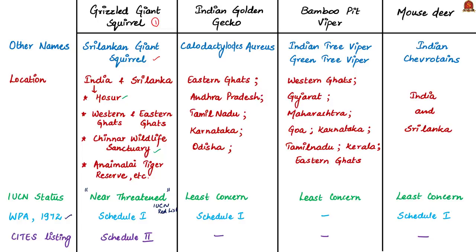The Grizzled Giant Squirrel is also listed under Schedule 2 of CITES — the Convention on International Trade in Endangered Species of Wild Fauna and Flora. Next, let us see about the Indian Golden Gecko. Its scientific name is Calodactylodes aureus. The etymology of its genus name Calodactylodes comes from a Latin word meaning 'beautiful fingers', because of the unique triangular lamellae on their feet which makes them adept at sticking to vertical surfaces.